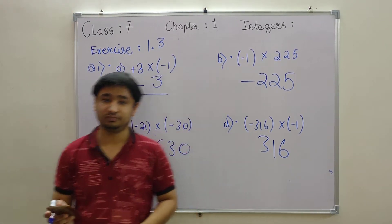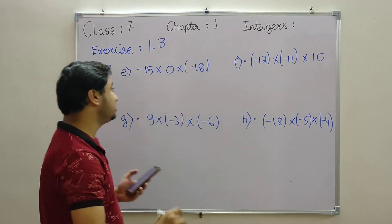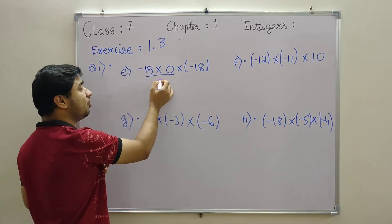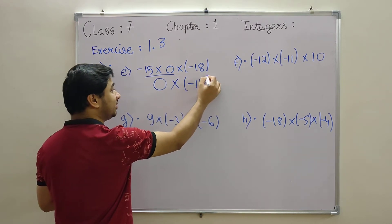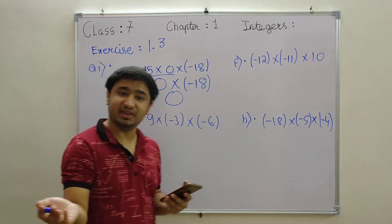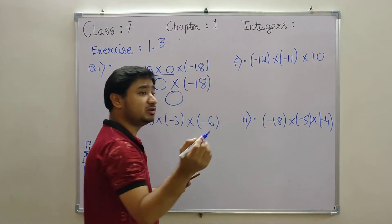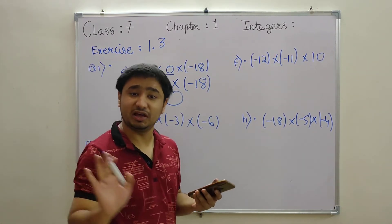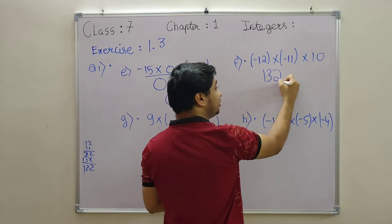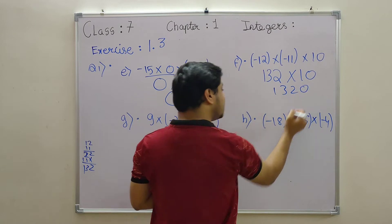Moving to the next option — three digits have come, no need to worry, we will solve carefully. First: 15 into 0 is 0; 0 into minus 18 — zero into anything is zero. Next: 12 into 11 is 132; 132 into 10 is 1320.